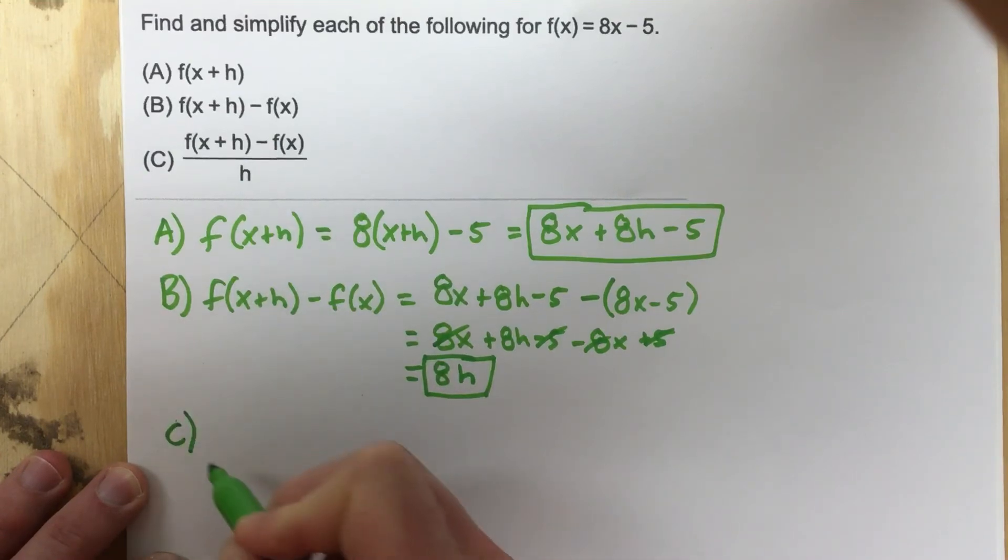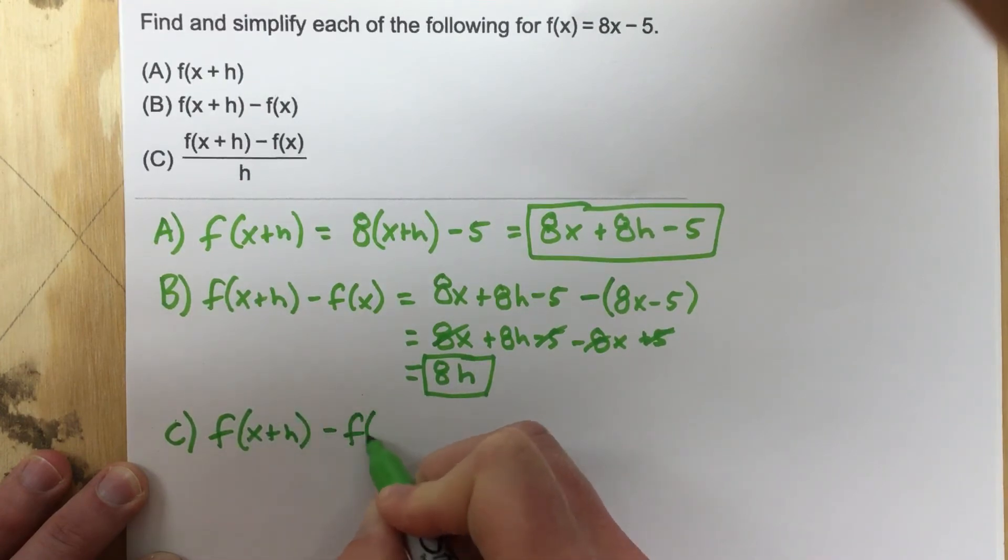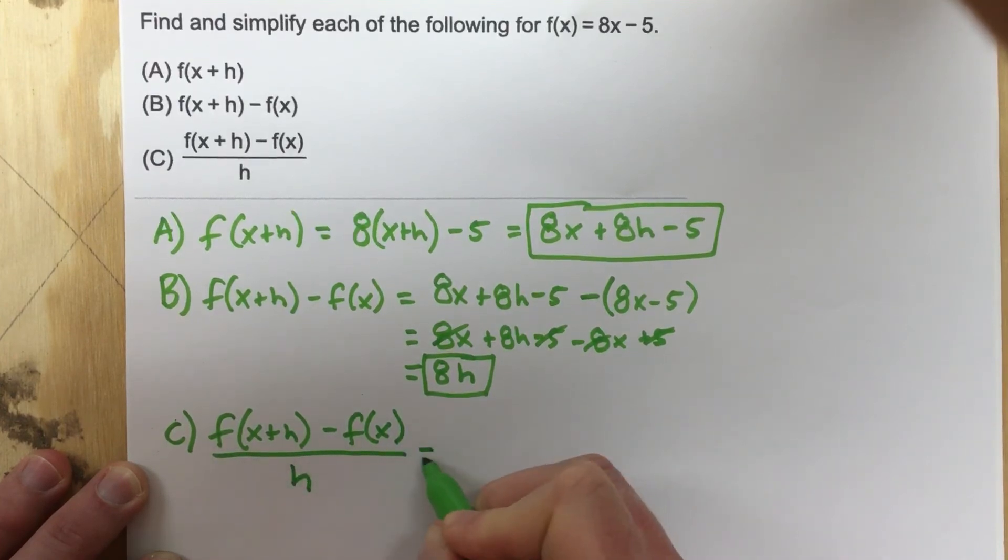we end up with f(x + h) minus f(x) over h is what they want us to do. We just did f(x + h) minus f(x),